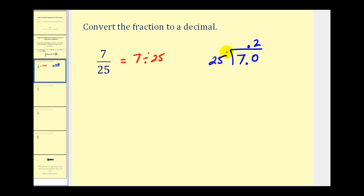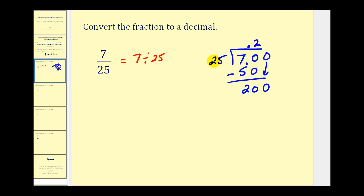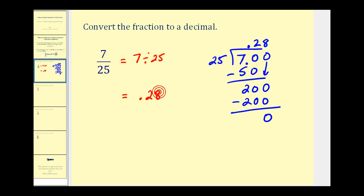There are two twenty-fives in seventy. Two times twenty-five would be fifty. We subtract — seventy minus fifty would be twenty. Remember, as long as this difference is less than the divisor of twenty-five, this digit up here is correct. We keep adding zeros until the decimal terminates or repeats. We add another zero and bring it down. How many twenty-fives are there in two hundred? I know there are four twenty-fives in one hundred, so there would be eight twenty-fives in two hundred. Eight times twenty-five is two hundred. We subtract and the difference is zero, so we're done. Seven twenty-fifths in decimal form is 0.28, or twenty-eight hundredths.